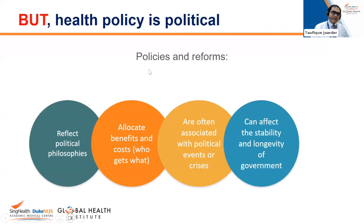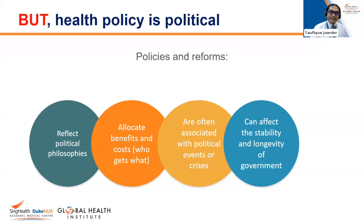Health policy is highly political. Policies and reforms reflect political philosophy, not just the evidence that is there. For example, if you look at the abortion law in the US, it largely depends on who is in power at that time when these laws are being discussed or promulgated. Policies and reforms also depend on the allocation of benefits and costs — who gets what, who gets the benefit, and who bears the burden. These are political issues that determine policy adoption as opposed to just bare-bone evidence.